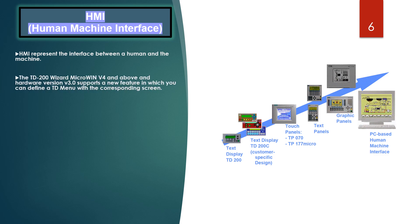Now we will discuss the TD200 Visor. The TD200 Visor — Microwin v4 and above, hardware version 3.0 — supports new features in which you can define a TD menu with a corresponding screen hierarchy, specifying in which sequence screens are displayed to the TD200 operator. User-defined custom design screens can also incorporate embedded messages, just like bit-triggered messages.